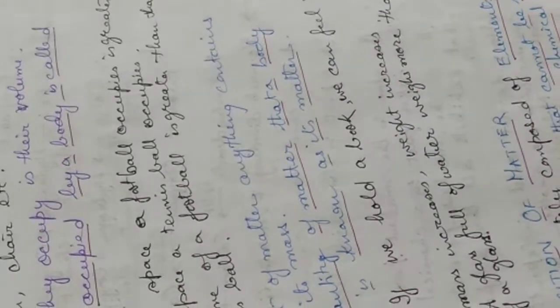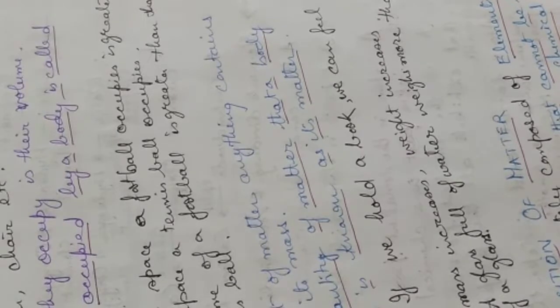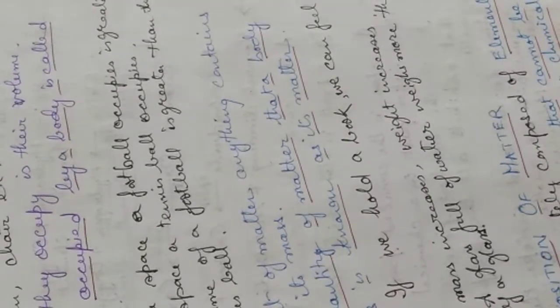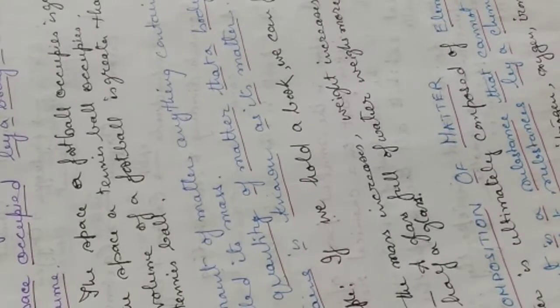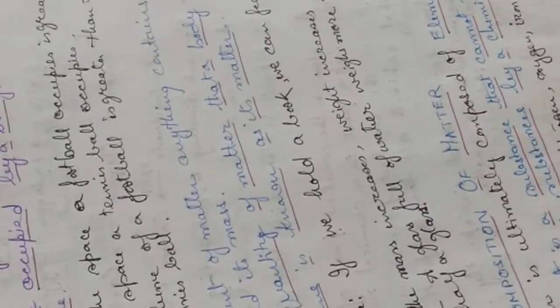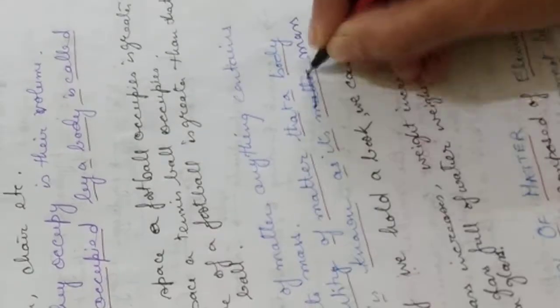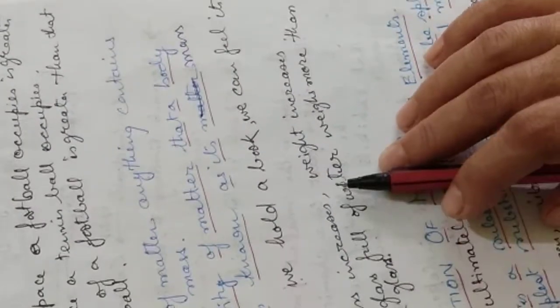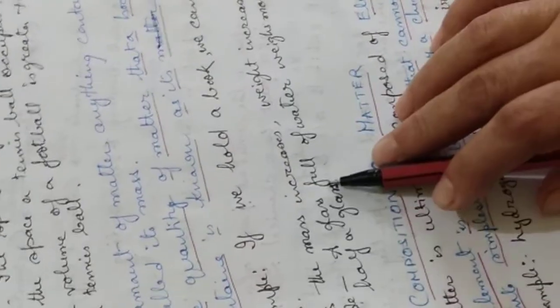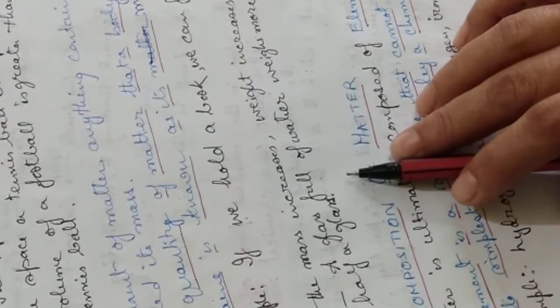The amount of matter anything contains is called its mass. The quantity of matter that a body contains is known as its mass. For example, if you hold a book, we can feel its mass — we can feel that it is heavy or light. As the mass increases, weight increases. For example, a glass full of water weighs more than half a glass of water.